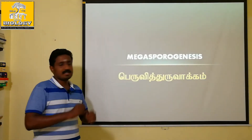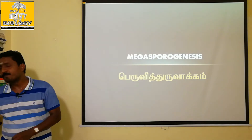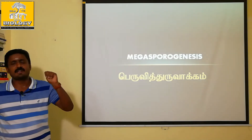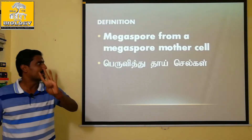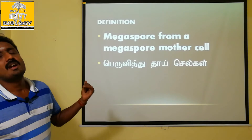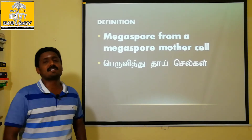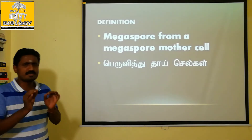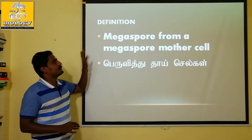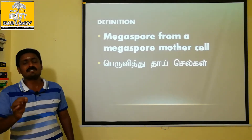So, Megasporogenesis — first, there are 4 steps. The third step deals with the definition. The definition is very easy, starting from the Megaspore mother cell.